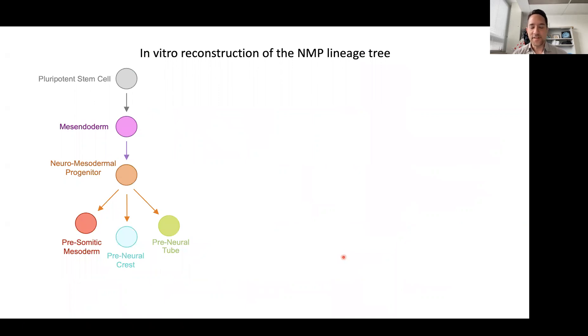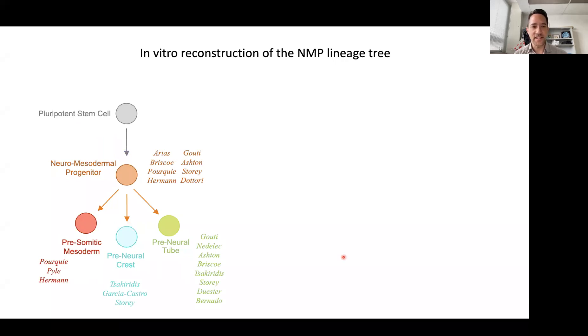This field is actually a very rich field and a lot of good work has been done, especially in the last five to ten years. It's clear now that a mesendodermal intermediate is not necessarily required to derive the lineage tree of neural progenitors. Here, beside the NMPs, I've written some of the labs that have made important contributions to building these protocols.